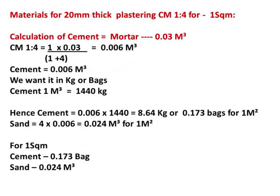Now calculating cement and sand for 20 mm thick plastering at 1:4 mortar ratio for 1 square meter. The dry volume of mortar is 0.03 cubic meters. For cement, 1 part into 0.03 cubic meters divided by (1+4) equals 0.006 cubic meters of cement.